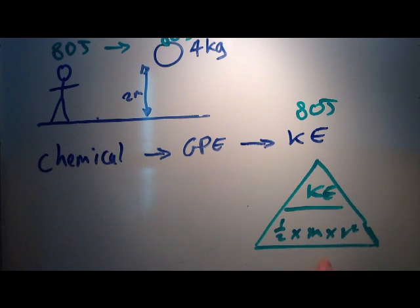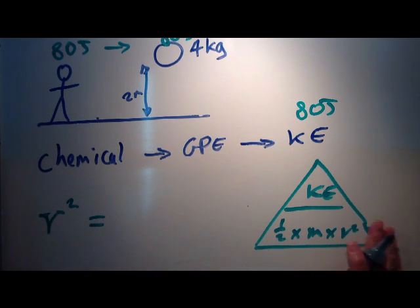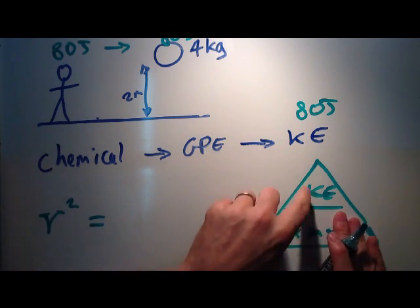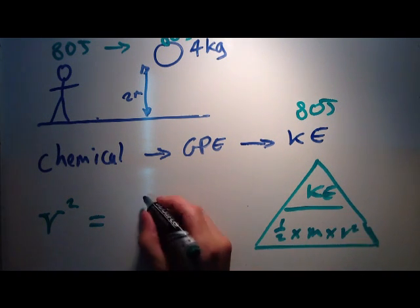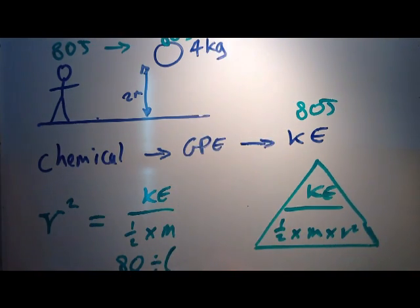And what does that mean in terms of the velocity? Well, if we take this triangle here and we're going to use it to rearrange, so I'm going to get V squared. V squared—I cover the V which gives me kinetic energy divided by one half times M. So KE over one half times M. Well, what numbers do I know? I know that kinetic energy is 80 divided by one half times M. Well, one half times M, the mass is 4, one half of that is 2. So the maximum velocity of this will be 80 divided by 2, 40 metres per second.